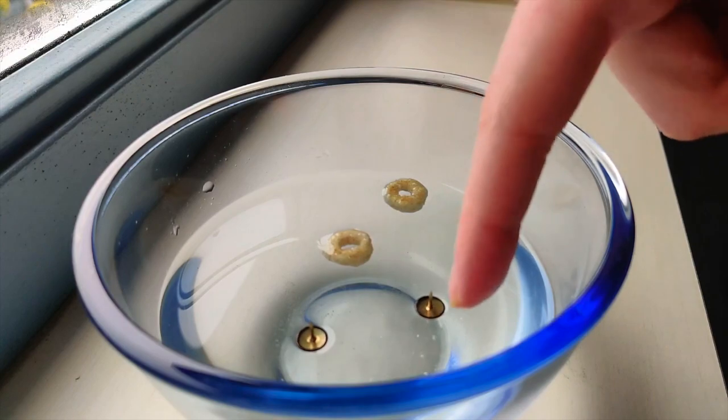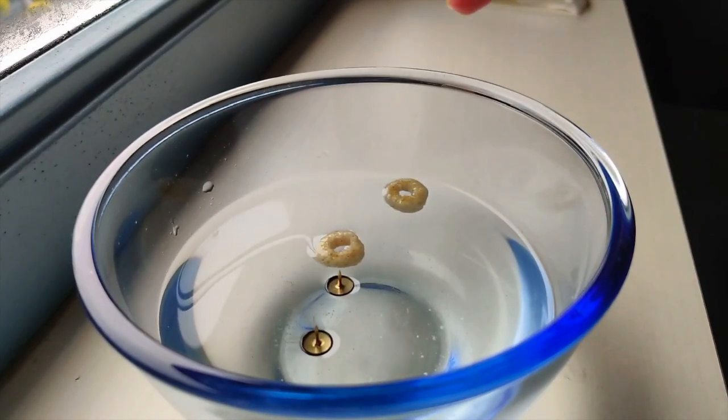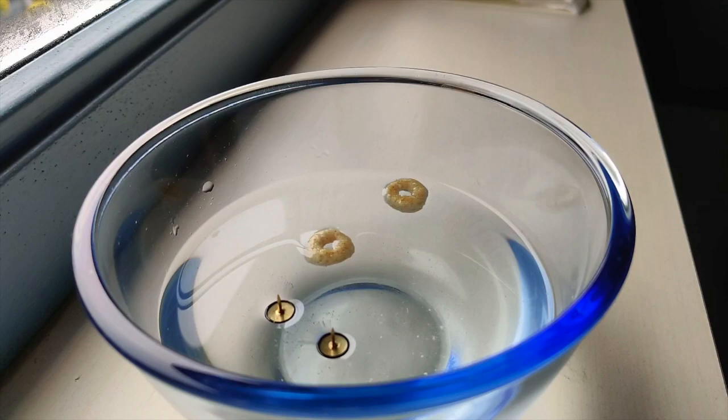A result of the different interaction the thumbtacks and the Cheerios have with the water is that they repel each other instead of attracting, like we see for the interaction between two Cheerios or two thumbtacks.